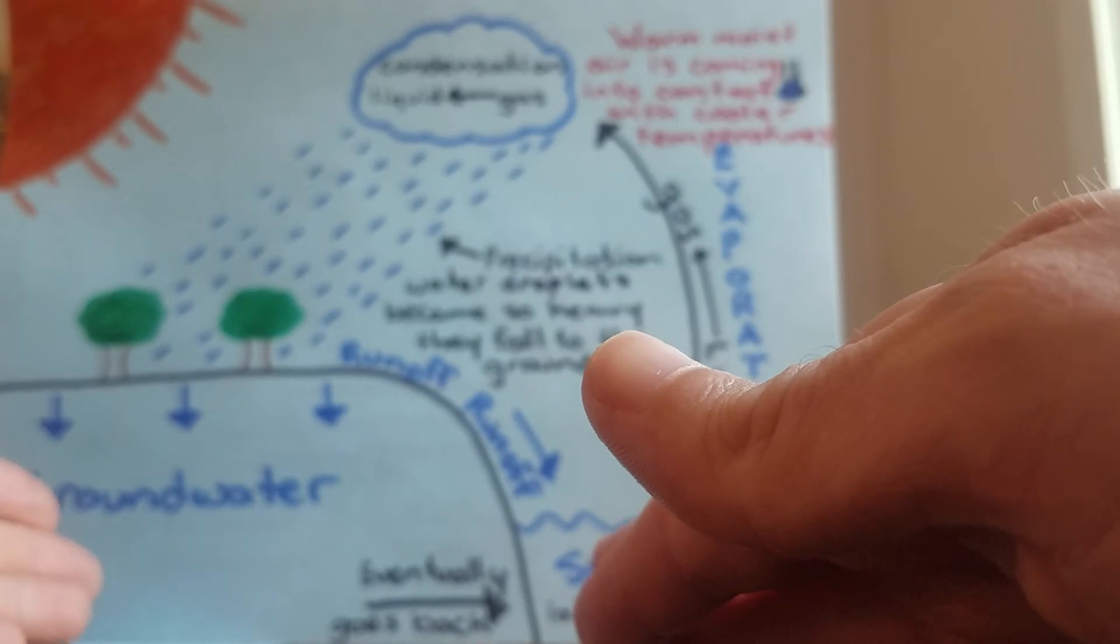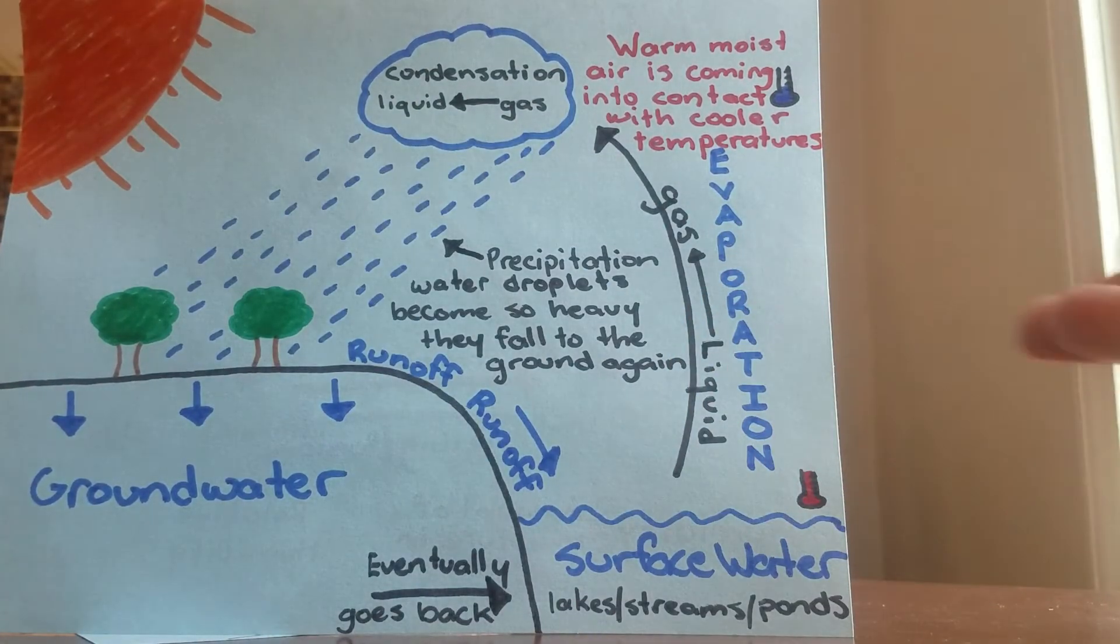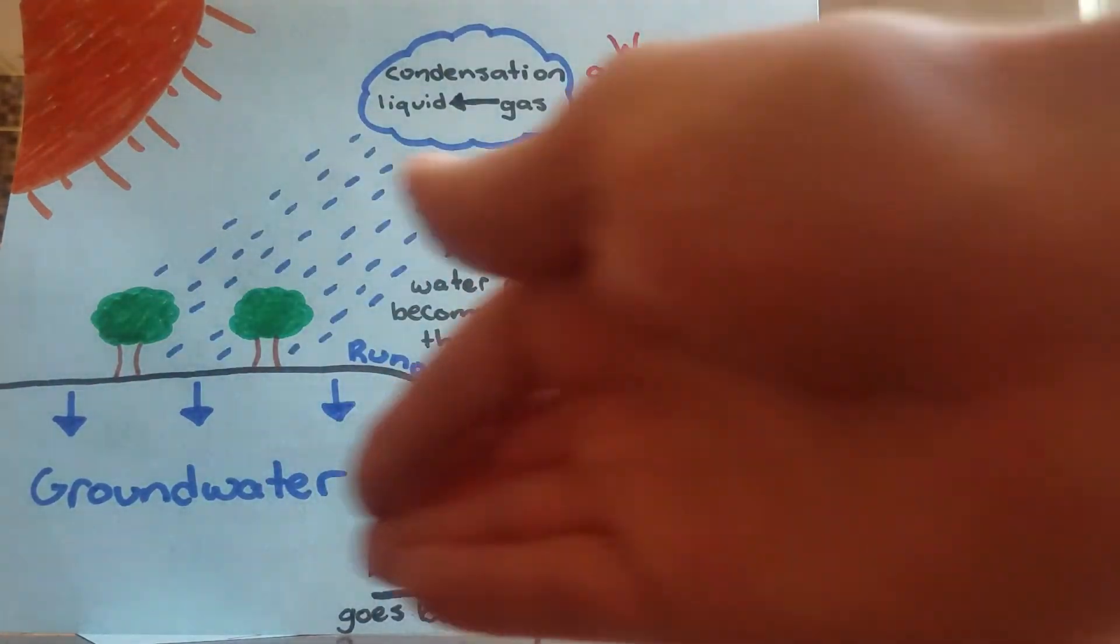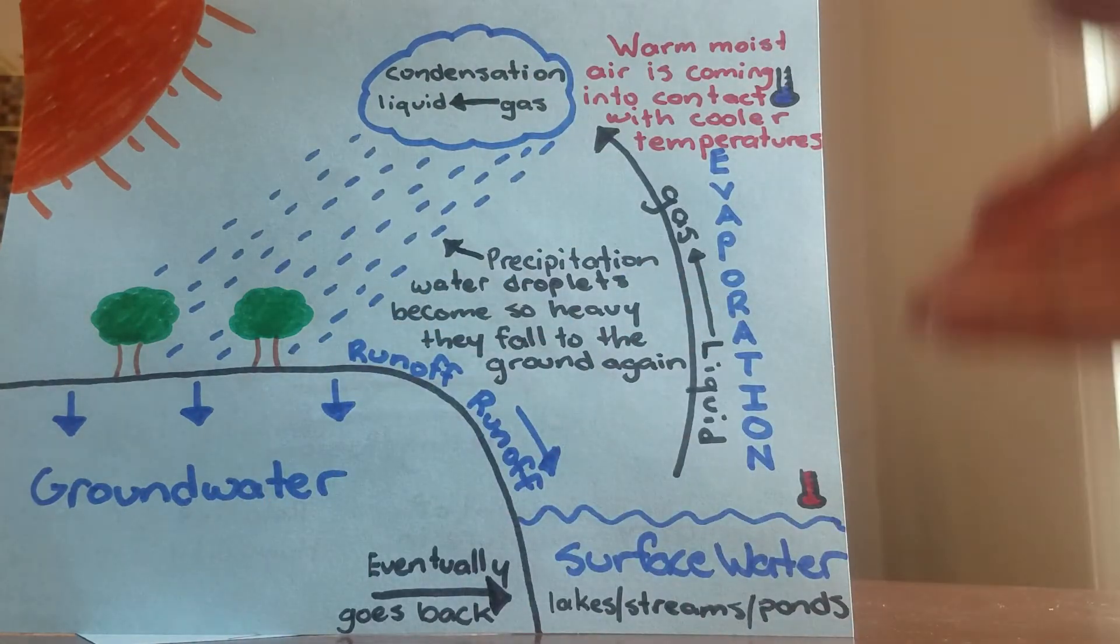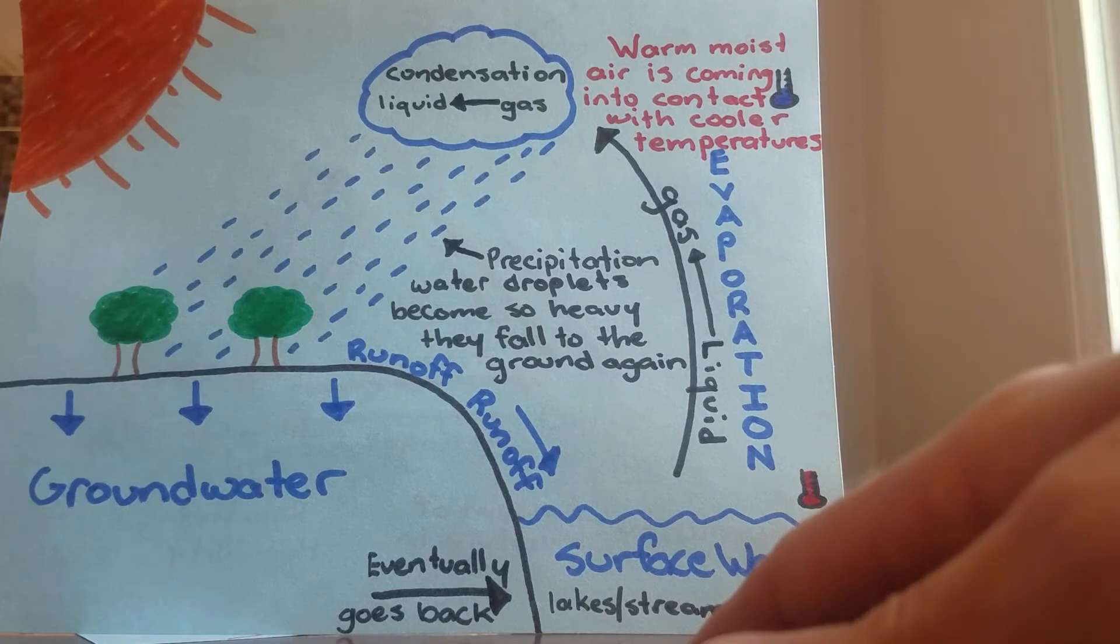So water comes down, goes into the groundwater first. Depending on how saturated that groundwater is, it's going to determine the rate of that runoff. And I'd like to also add that the groundwater actually also eventually goes back into the surface water resources. So at the end of the day, the water is always going to go back into some form of surface water—it's going to lead back to an ocean, to a stream, or a pond.